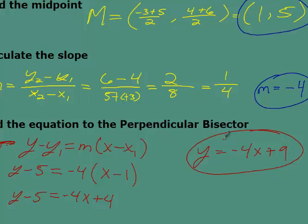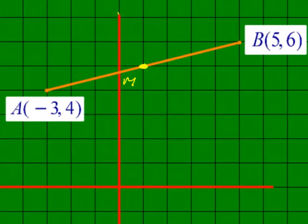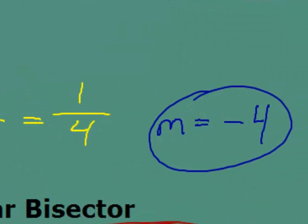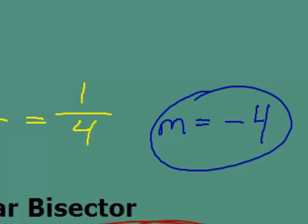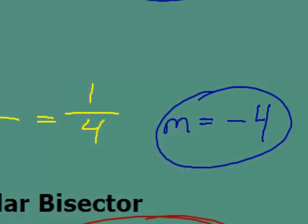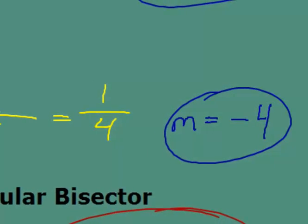The slope of the original line is 1/4. The line I want has to be perpendicular to it, so I take the slope and change its sign — that's the opposite part. Positive becomes negative. Then I take the reciprocal of 1/4, which is 4. So the perpendicular slope is negative 4. That's the connection between perpendicular lines: their slopes are opposite reciprocals.